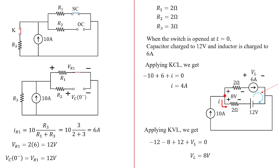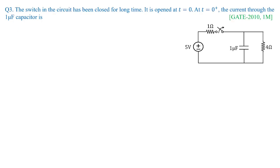These are very important and basic concepts frequently asked in GATE exams. In Problem 3, GATE 2010 asked for 1 mark: the switch in the circuit has been closed for a long time and is opened at t equal to 0. At t equal to 0 plus, the current through the 1 microfarad capacitor is required. Remember: when the switch was closed for long duration, capacitor completely charges and becomes open circuit, and its voltage equals the voltage across the 4 ohm resistor.